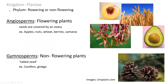Once we go a step below kingdom, we're into phylum. This is where plants are classified into whether they flower or not. Angiosperms are our flowering plants, and gymnosperms are our non-flowering plants. Angiosperms are our flowering plants — seeds are covered by an ovary. Examples include apples, nuts, wheat, berries — all kinds of dry and fleshy fruits that come from our flowering plants.